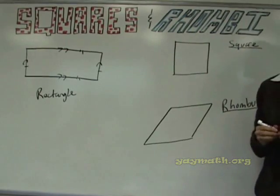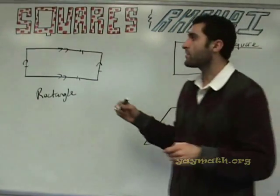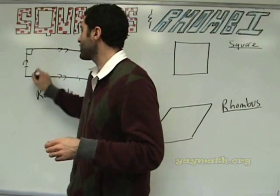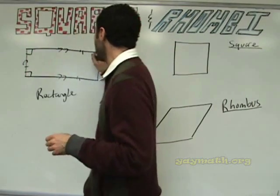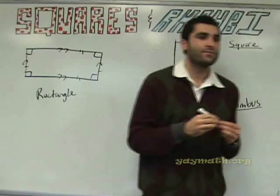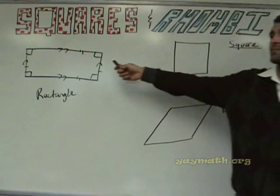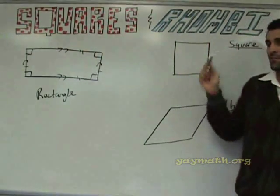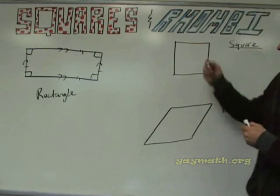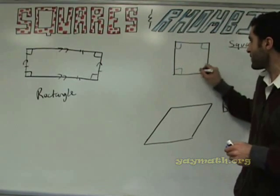What else? All angles are equal. All angles are equal, and what are they? Ninety degrees. Very good. So all these are equal — that's the same in a rectangle. We're talking about similarities between a rectangle and a square. All angles are equal and they're all ninety.